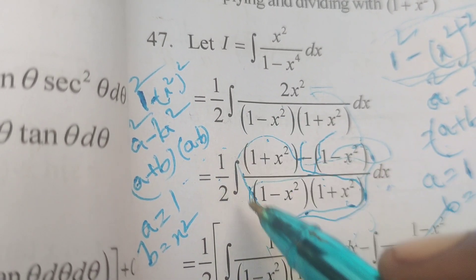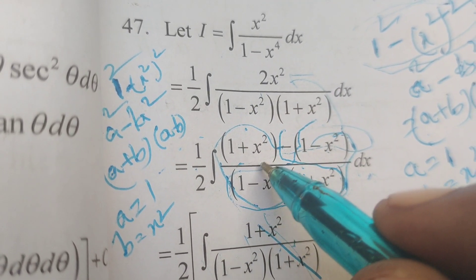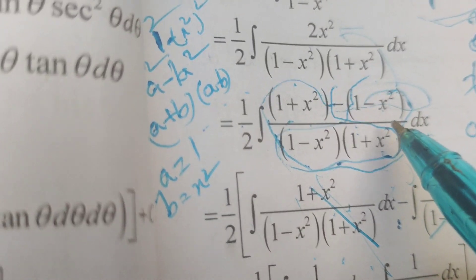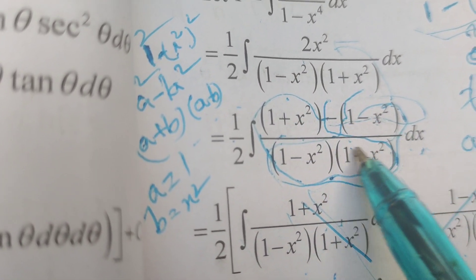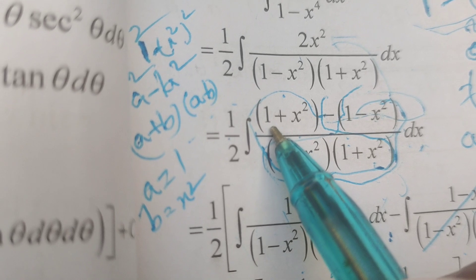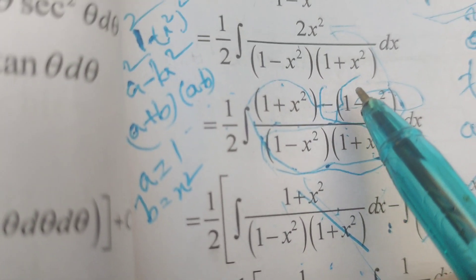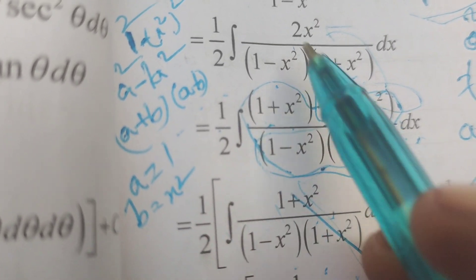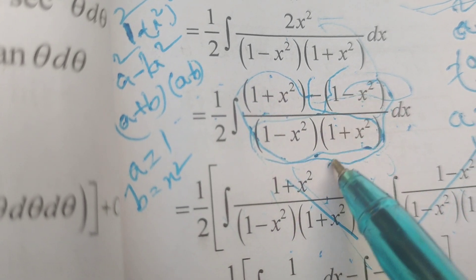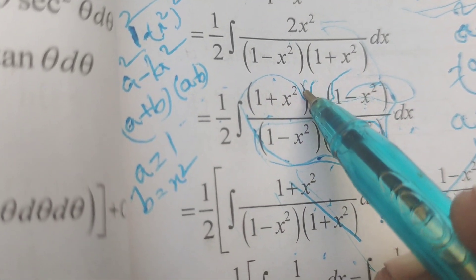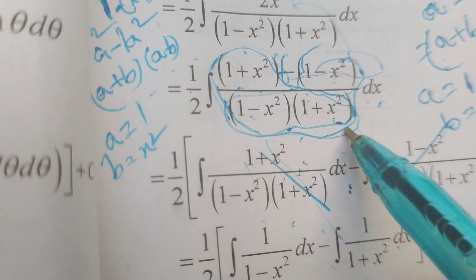Next, take 1 by 2 integral of 2x squared, splitting the numerator as 1 plus x squared minus 1 minus x squared. Simplifying: plus 2x squared gives 1 plus x squared minus 1 plus x squared, so minus 1 plus 1 gets cancelled, leaving plus x squared in the denominator as it is.